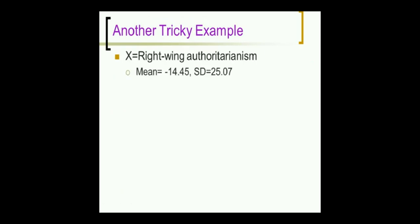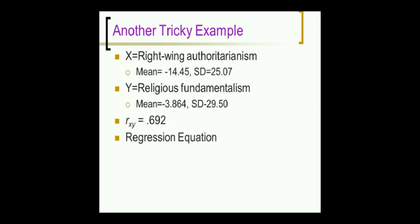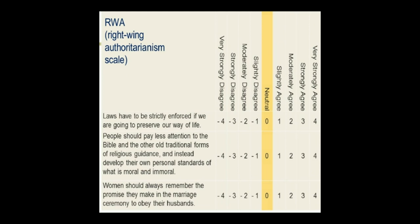Here's another tricky example. X is right-wing authoritarianism from the punishment data. And y is religious fundamentalism. These are just some questionnaires given to people. A relatively strong correlation between them for social science terms. I'm going to show you what the survey looks like. This is what the survey looks like. It goes from very strongly agree down to very strongly disagree. Nine options. The middle is 0. The author of this test chose to make the disagree items negative and the agree items positive. 0 is not on the left. 0 is in the middle. It is a meaningful point, but it's not the low point.